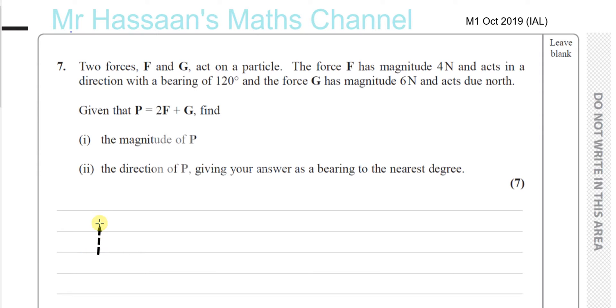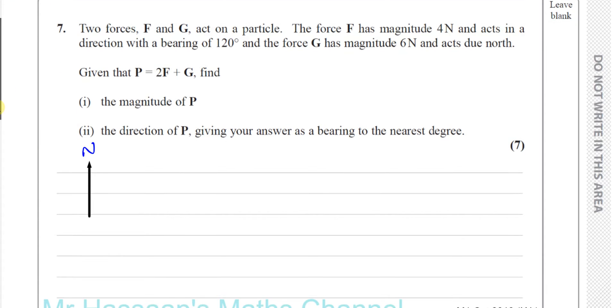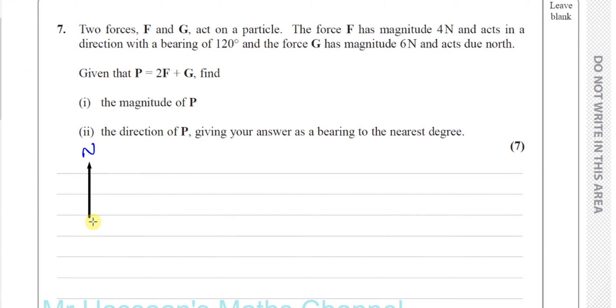So that means you have your north line. You have your north line. And a bearing of 120 degrees would be more than 90 and less than 180, so somewhere in this direction. You don't have to draw it accurately. This would be a bearing of 120 degrees, something roughly like that.